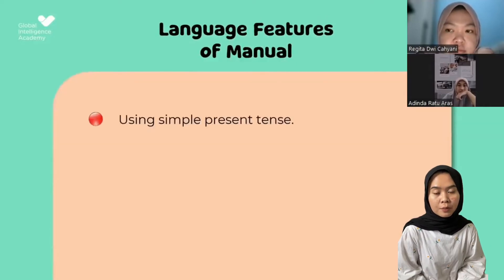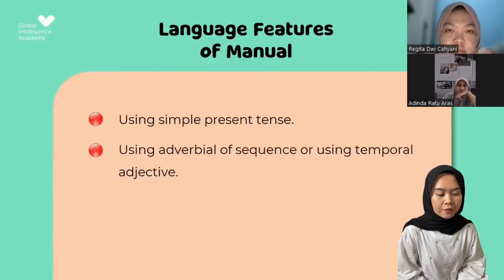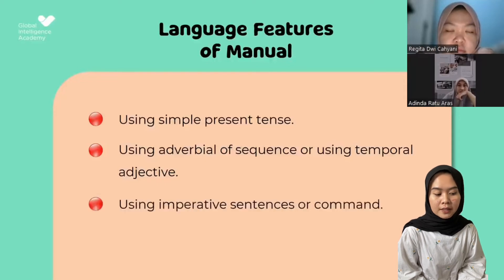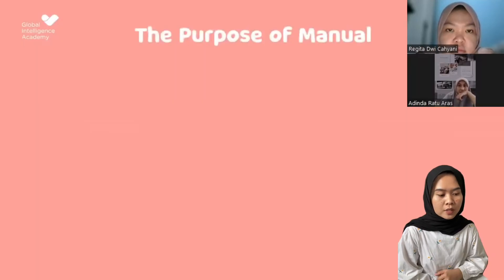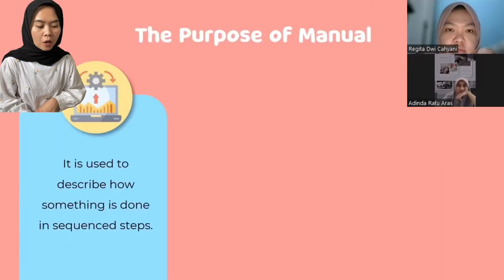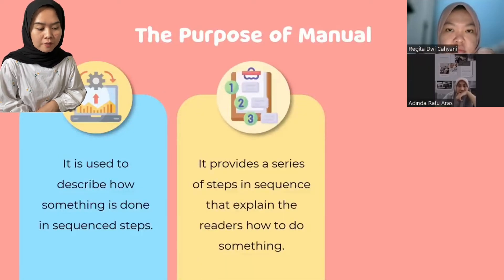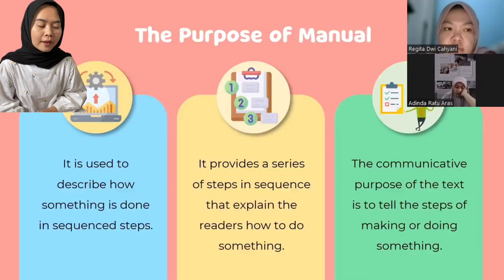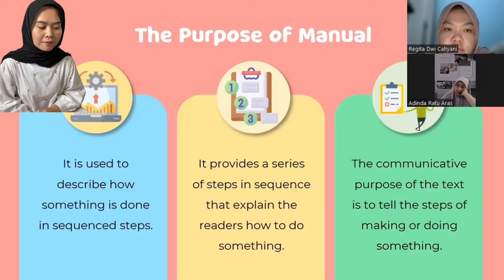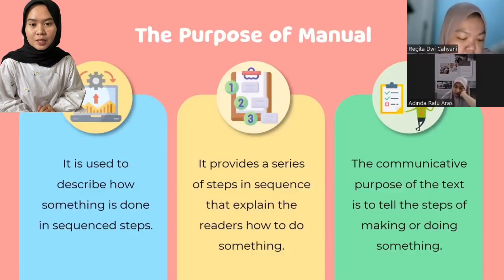Language features of manual procedure text: using simple present tense, using adverbial of sequence or temporal adjective, using imperative sentences or commands. The purpose of manual procedure text is to describe how something is done in sequential steps, and to provide a series of steps in sequence that explain to the readers how to do something. The communicative purpose is to tell the steps of making or doing something.